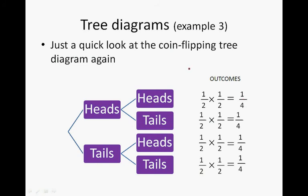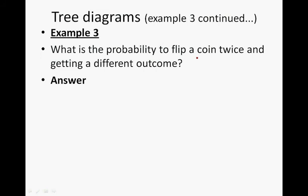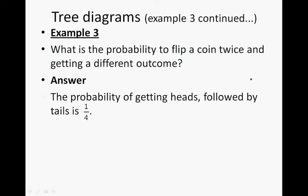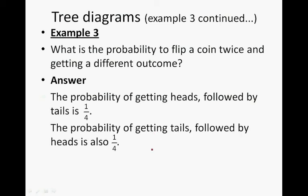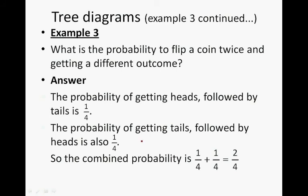Returning to the coin-flipping tree diagram: the probability of heads-heads is 1/4, heads-tails is 1/4, tails-heads is 1/4, and tails-tails is 1/4. The probability of getting heads followed by tails is 1/4. The probability of getting tails followed by heads is also 1/4. The combined probability is 1/4 plus 1/4, which gives us 2/4.